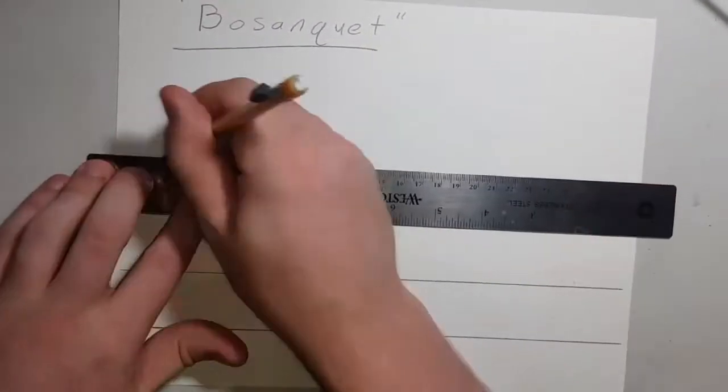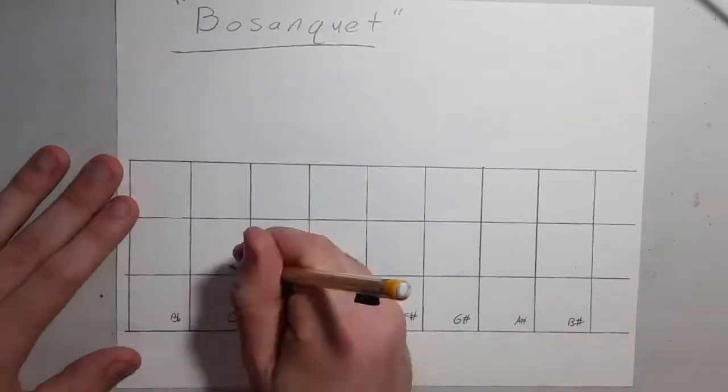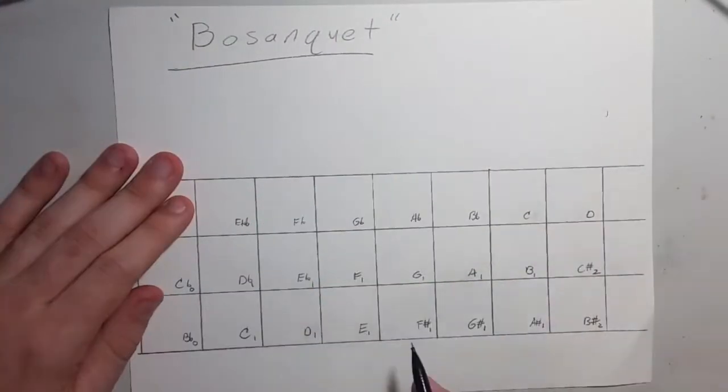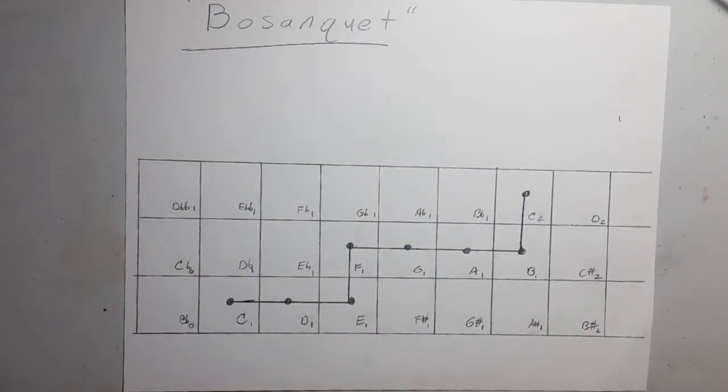The Bosanquet note layout was invented by Robert Bosanquet to perform music in 31-tone equal temperament, though it can support any other 2D tuning. Notice how this layout leads to a particularly linear representation of the diatonic scale, which may be of particular use to keyboardists who are already familiar with the piano.